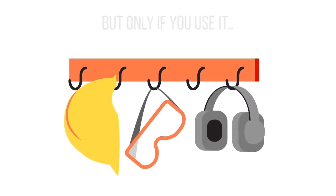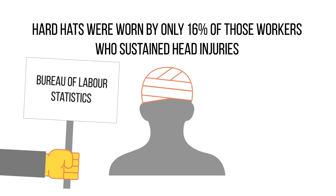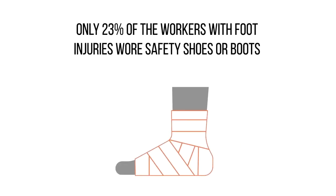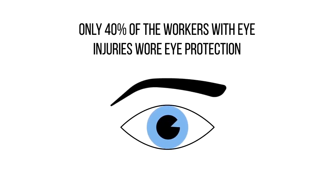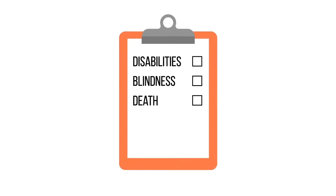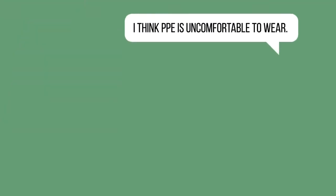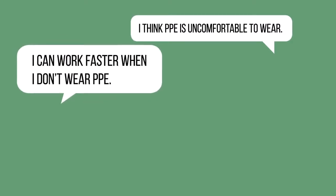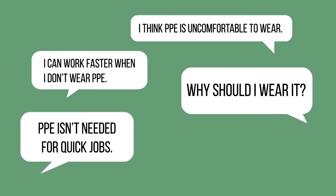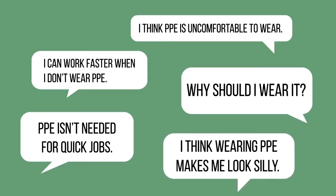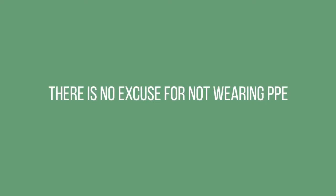But only if you use it. Regrettably, people continue to sustain head injuries because they don't wear hard hats. Feet are damaged because people choose to not wear safety shoes. And people foolishly risk their sight because they won't wear eye protection. Injuries can result in permanent disabilities, blindness, or even death. So why do people choose to not wear PPE? For some, it's a matter of comfort. Others feel that it slows them down. Some people simply don't see the need to wear it, especially for quick jobs. And most astonishingly, some people choose to put their lives in danger because they think it makes them look silly. Whatever the reason, there is no excuse for not wearing PPE.